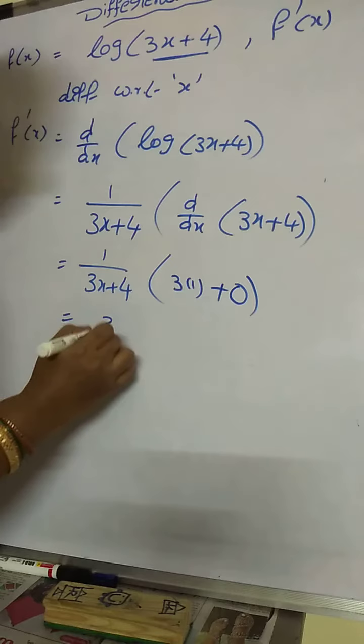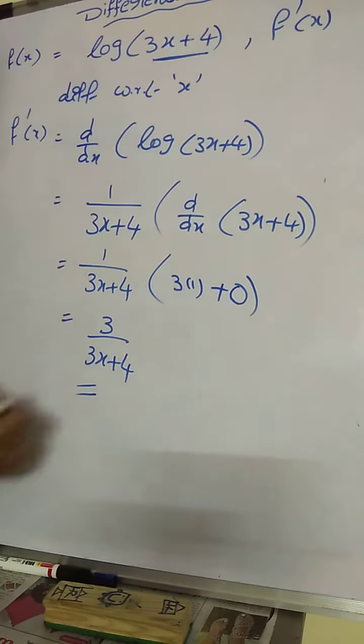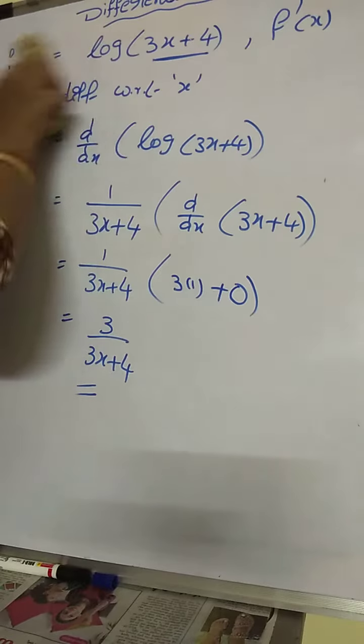Then 3, 1 by 3. Then answer is 3 by 3x plus 4. That is the final answer. f dash x is 3 by 3x plus 4. Let us take another formula.